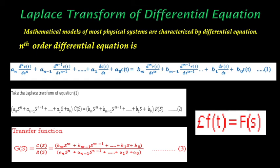Here, coefficients a and b are constant. Taking the Laplace transform of this differential equation — we know that the Laplace transform of f(t) equals F(s) — taking the Laplace transform of equation 1 gives: a_n s^n plus a_(n-1) s^(n-1) plus a_1 s plus a_0, where C(s) is common for all parts.